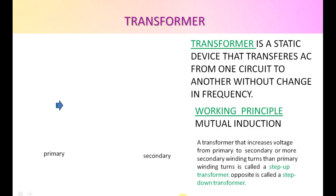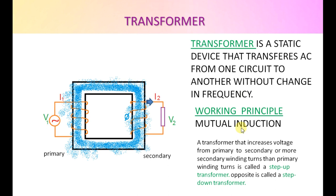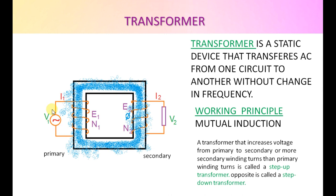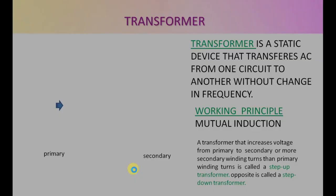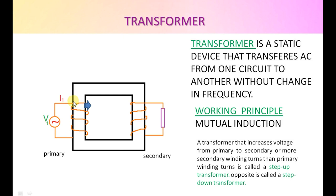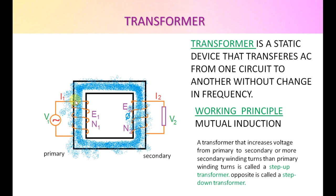Transformer. A transformer is a static device that transfers AC from one circuit to another without change in frequency. Working principle is mutual induction. V1 and I1 are voltage and current of the primary; V2 and I2 are those of the secondary. E1 and E2 are induced EMFs; N1 and N2 are turns of primary and secondary windings. Applying alternating current creates a constantly changing flux in the primary; by Faraday's law, EMF is induced. Variable flux of primary is linked to secondary through mutual induction, inducing EMF in the secondary.